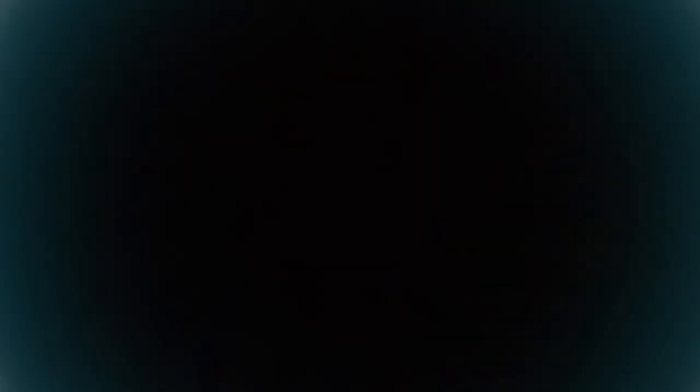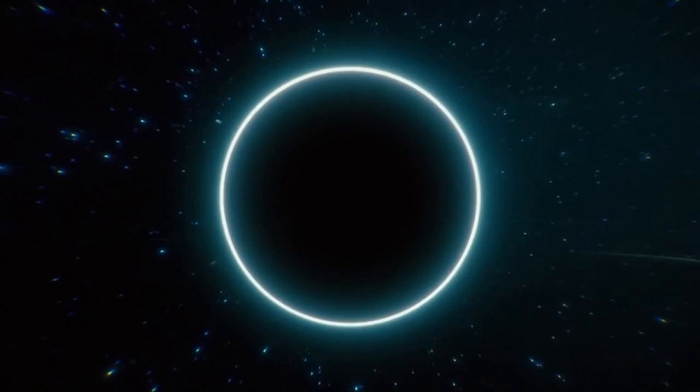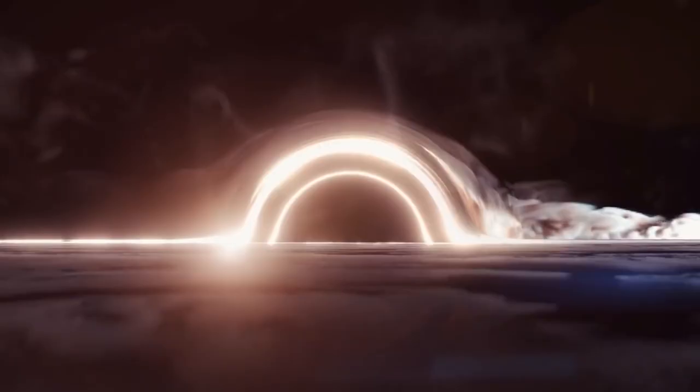According to certain theories, when white holes start to eject matter, the system would quickly collapse into a black hole once the expelled material collided with any matter in orbit. This could potentially lead to an unending loop of white holes converting into black holes and vice versa.